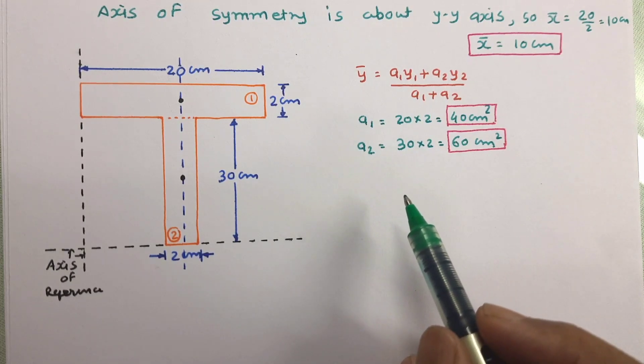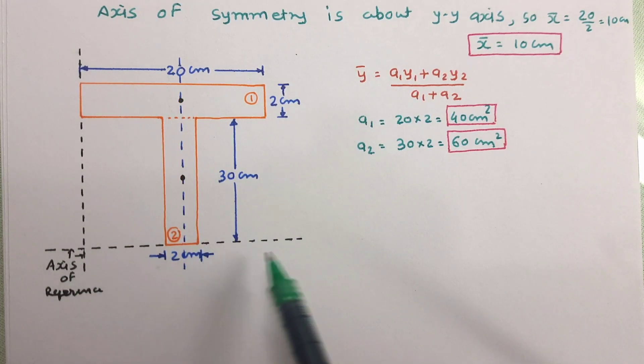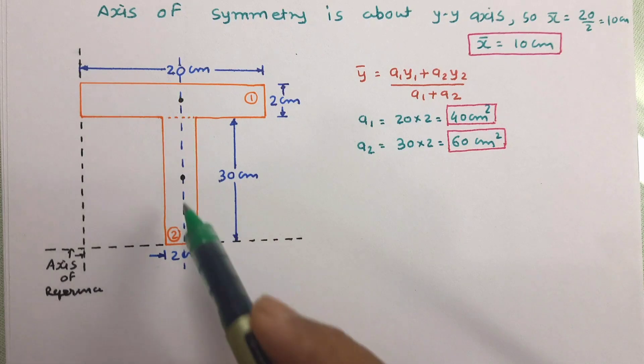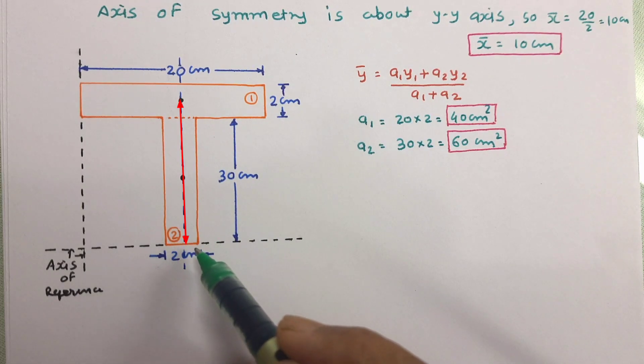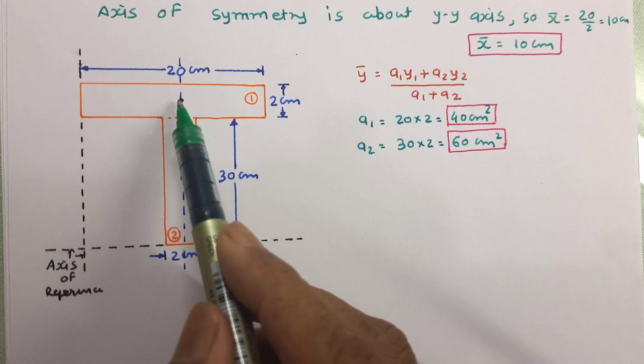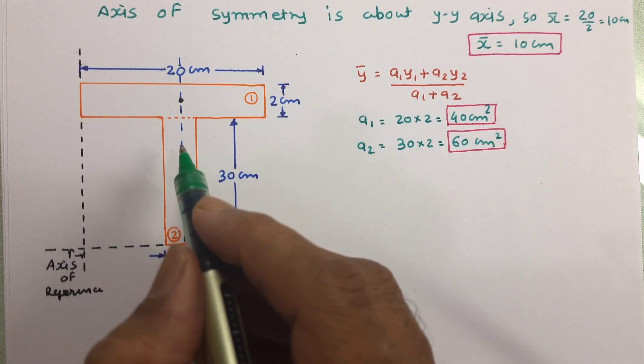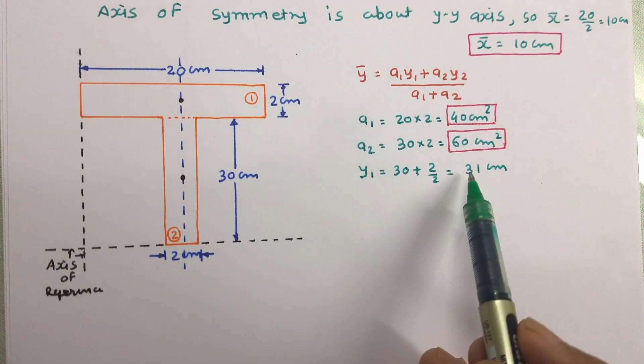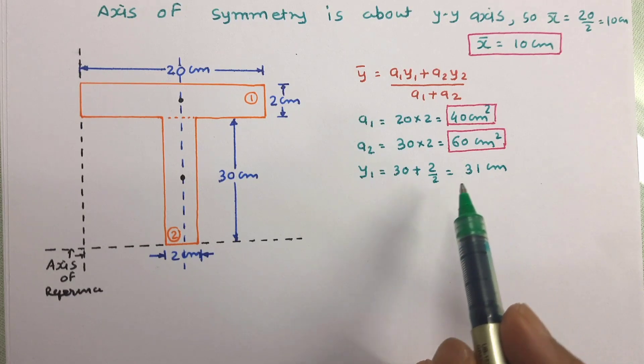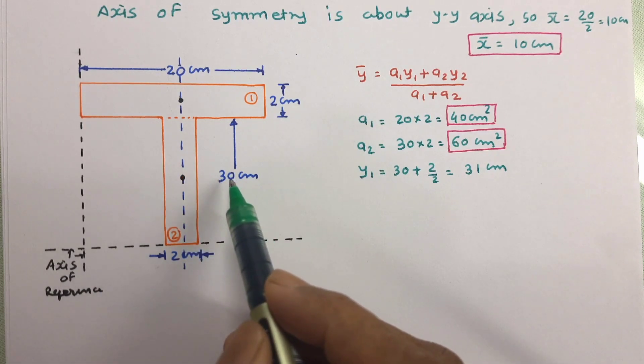So this is the area A1 and A2. Now let us work out y1 and y2. y1 is the distance of centroid of first figure from x axis. So it will be this much distance. We know that this distance is 30 and this centroid is at half of this width. So y1 will be 31 cm and y2 is the centroid of second figure from x axis. So it will be half of 30.